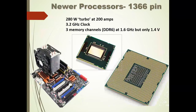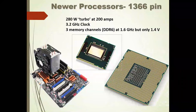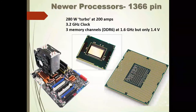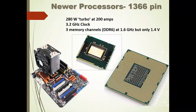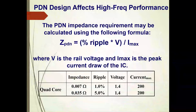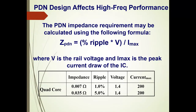These newer processors have not only a lot of pins and interconnect, but this one in turbo mode dissipates 280 watts, requiring nearly 200 amps at its 3.2 GHz clock, with three DDR6 memory channels running at 1.6 GHz — and the power distribution network must support the high-frequency performance of today's most advanced chips.